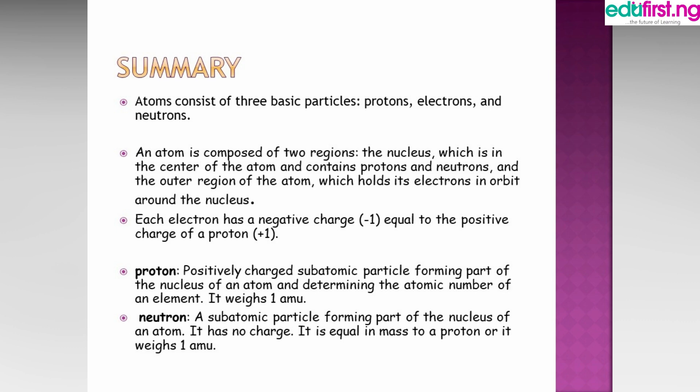The shells don't just carry any amount of electrons - they are configured. Each electron has a negative charge equal to the positive charge of a proton. A proton is a positively charged subatomic particle forming part of the nucleus of an atom and determining the atomic number of an element. It weighs one AMU.